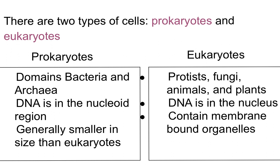Eukaryotes have a complex cell structure with a high degree of organization, including a membrane-bound nucleus and organelles. Examples include plant cells, animal cells, fungal cells, and protist cells. Eukaryotic cells are quite a bit larger and may exist as a single cell or make up complex multicellular organisms. Their genetic material is found as multiple linear chromosomes with associated proteins. Their ribosomes are significantly larger than those in prokaryotes, and they have mitochondria and chloroplasts that are also significantly larger than those found in prokaryotes.